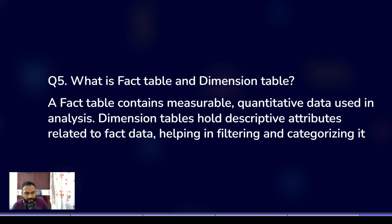What is a fact table and a dimension table? A fact table contains measurable, quantitative data used in analysis, and a dimension table holds descriptive attributes related to fact data, helping in filtering and categorizing it. In the fact table you have all the keys so that you can link to the dimension table.